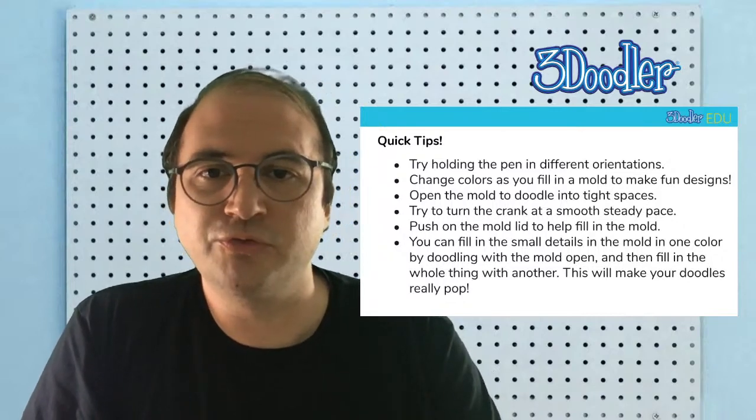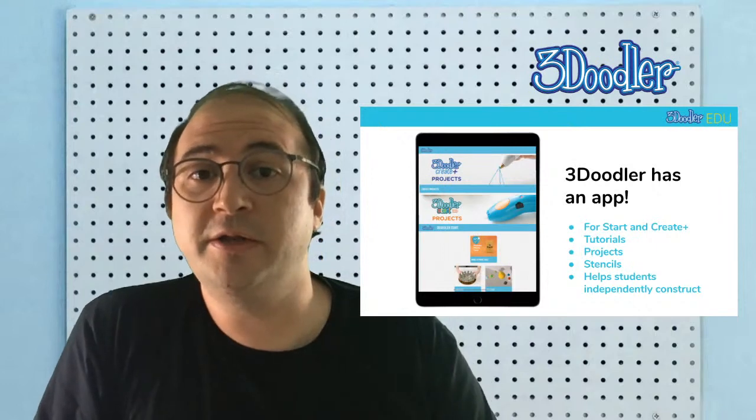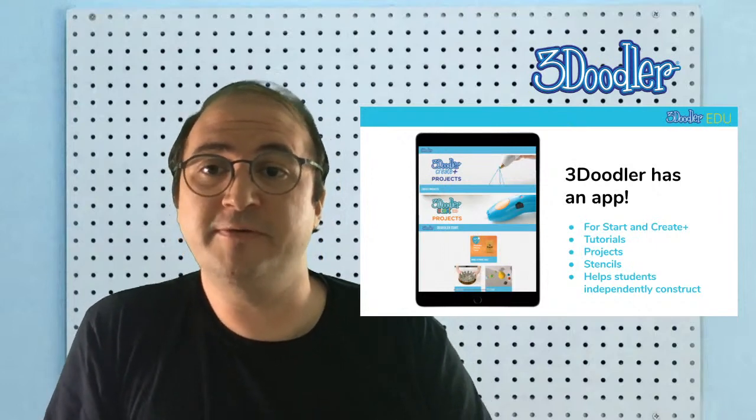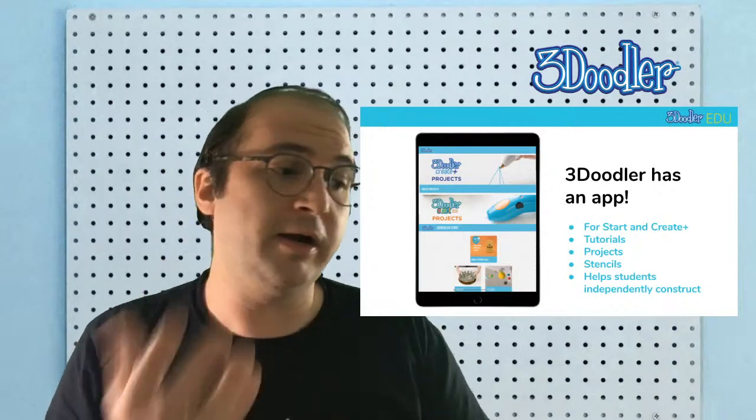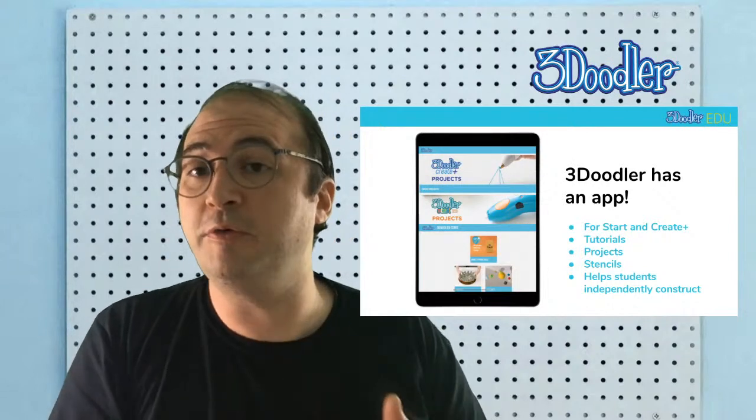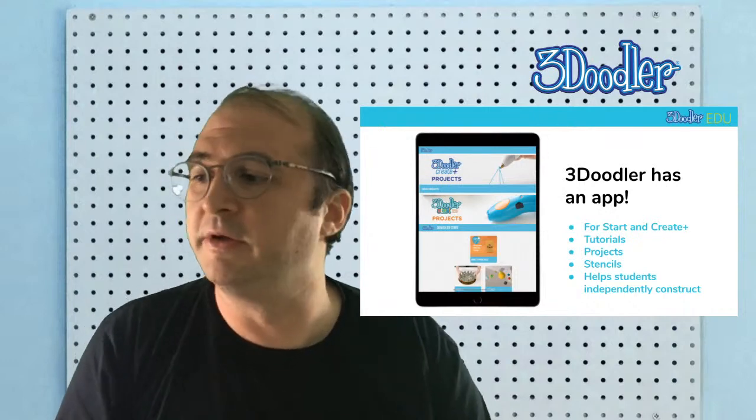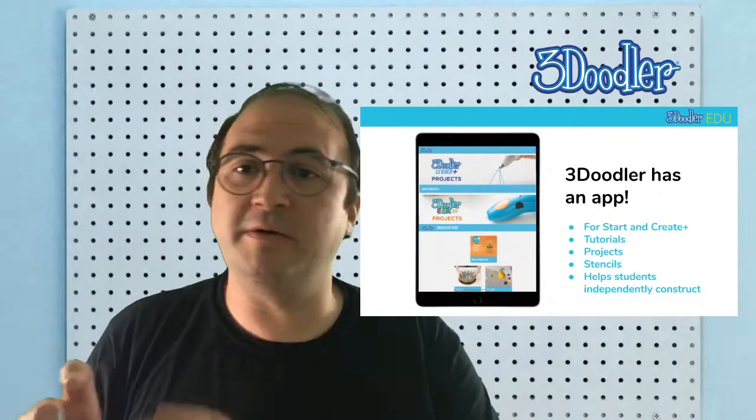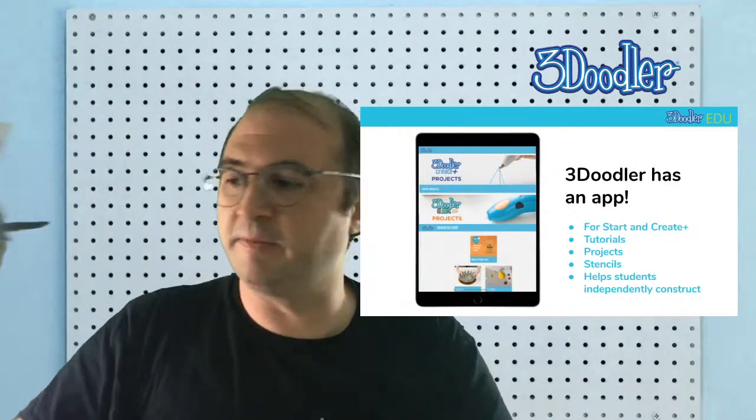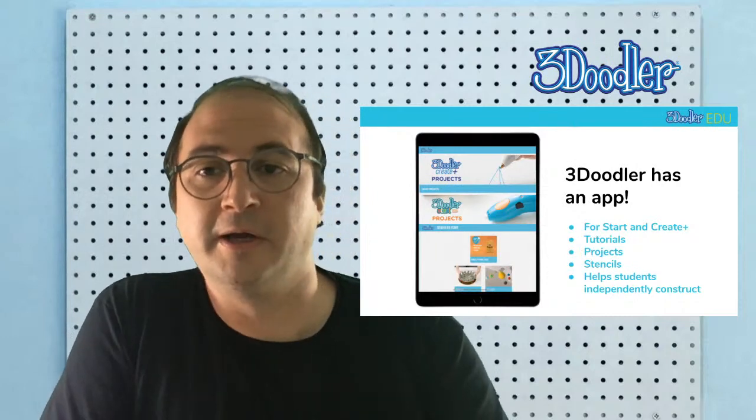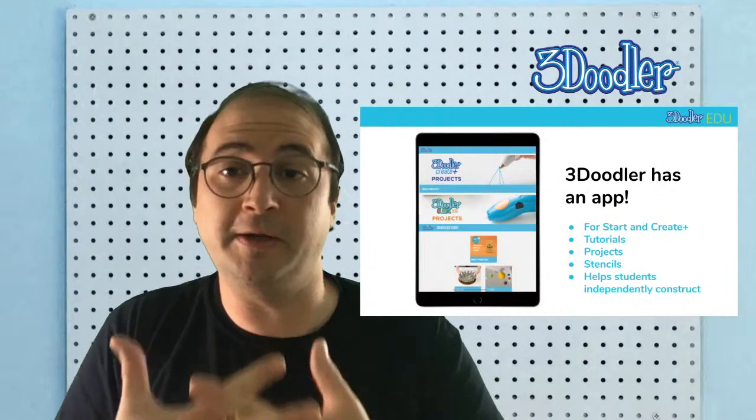There are instructions in the 3Doodler app as well for the Build and Play. We've just added them. Very excited about it. It has details on making each of the characters. It also offers the three new backgrounds available right there for download. You can print them out. Right now my favorite one is space. So I'm excited about the space one. There's obviously additional projects on there for both the Start and the Create Plus.